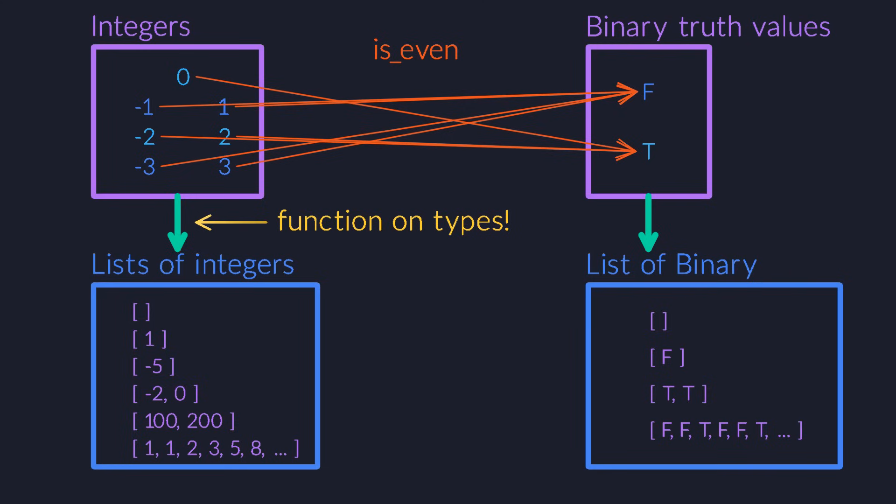But there's more. We have this function called isEven. It's an ordinary function that takes an integer and tells you whether it's even or not. Our functor can take this function and transform it into a new function on lists.